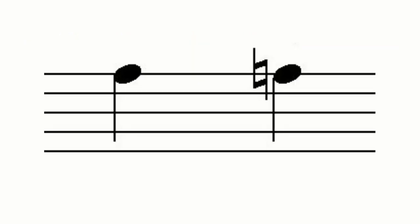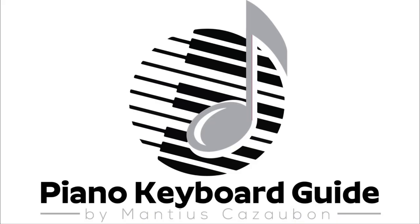Here is another example. The key of G has one sharp and that sharp is F sharp. To indicate that you should play F and not F sharp, a natural sign will be placed before the note. In this case, the natural sign cancels the sharp.